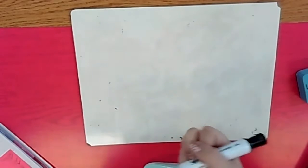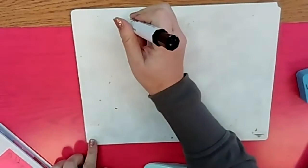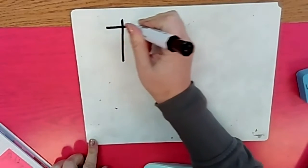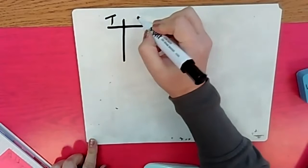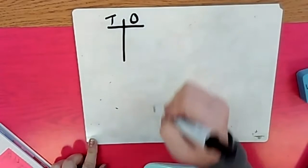Okay, so here's what we're gonna do. We're gonna make a T chart like this, letter T. And we're gonna label it T for tens, O for ones. Tens and ones.